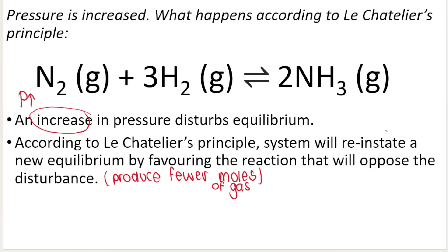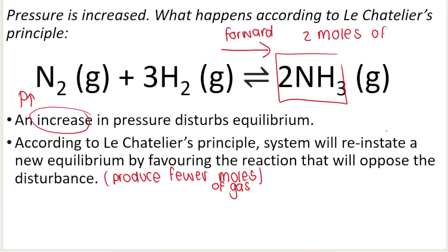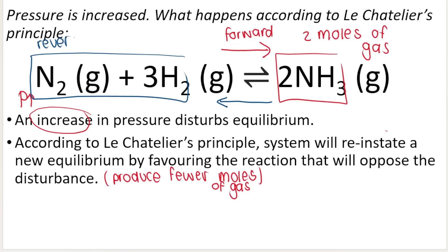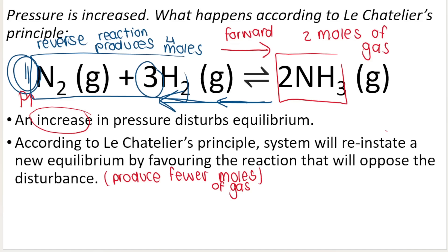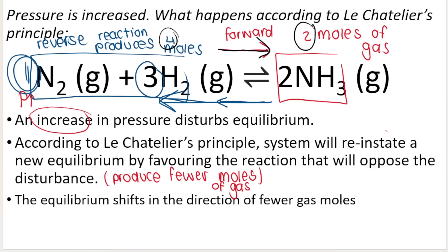The forward reaction is the one that points in the forward direction, and it produces two moles of gas. The reverse reaction points in the opposite direction and produces four moles of gas — one plus three, so four moles. Because I increased pressure, the system favors the reaction that produces fewer moles of gas. Therefore, the forward reaction is favored because it produces two moles of gas, which is less than four moles. Equilibrium shifts in the direction of fewer gas moles, so the forward reaction is favored.